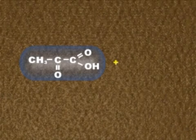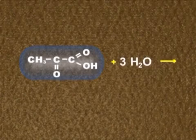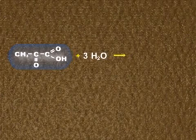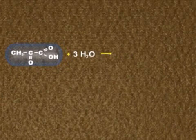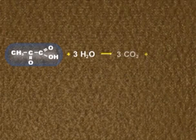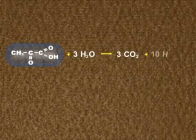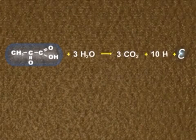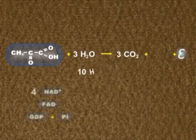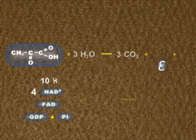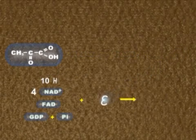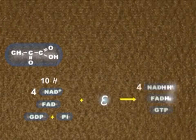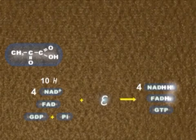Pyruvic acid will be degraded by reacting with water. Degradation progresses in several steps in which the oxygen of the water is used to form carbon dioxide gas, using ten atoms of hydrogen taken from the water and the pyruvic acid. During this process, energy is released. The hydrogen and the largest part of the energy liberated will be used to reduce four molecules of nicotinamide adenine dinucleotide, or NAD, and one of flavine adenine dinucleotide, or FAD.